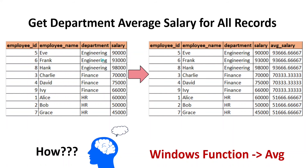I have three records for department engineering, three records for finance, three records for HR. Basically, I have to calculate average salary for each department and that should be associated with all the employees. For example, the first three employees are part of the engineering department, so the engineering average salary is given in this field. Coming to other people who are part of finance, the finance average salary is given along with their salary. Once we get output similar to this, we can apply a WHERE condition where employee salary is greater than average salary. It is going to be a very simple filter operation.